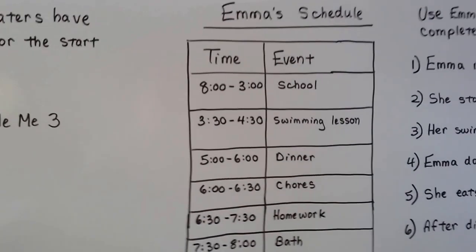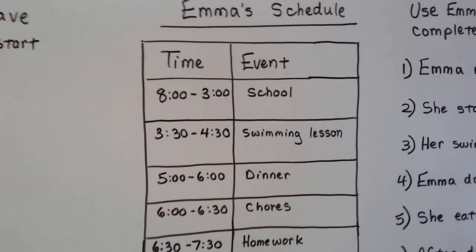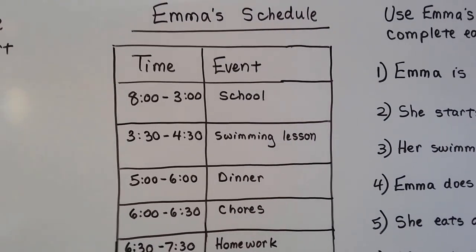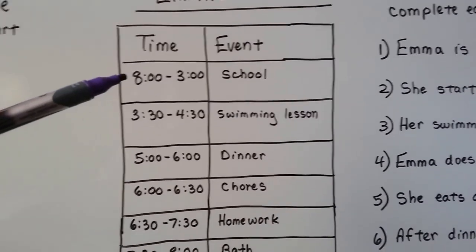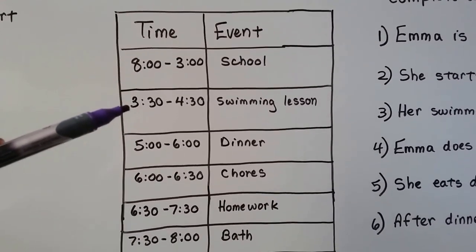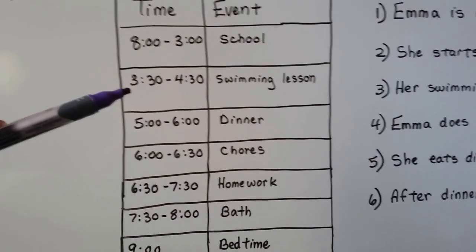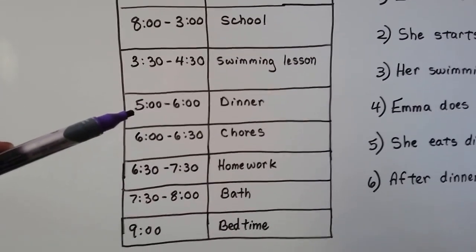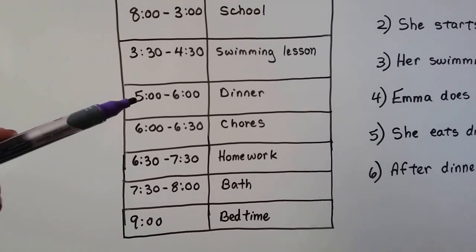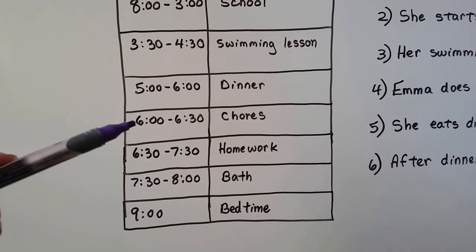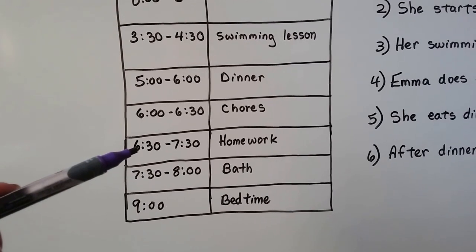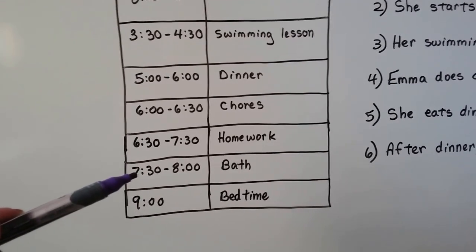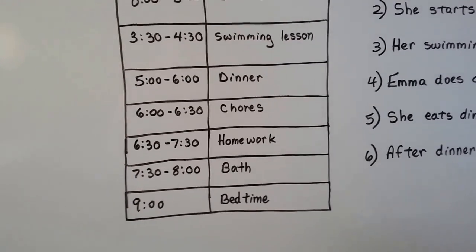Now here's Emma's schedule, and this is make pretend for the lesson. But I made a schedule for Emma. We can see from 8 o'clock to 3 o'clock she's in school. From 3:30 to 4:30 she has a swimming lesson. From 5 o'clock to 6 o'clock she eats dinner. From 6 o'clock to 6:30 she does chores. From 6:30 to 7:30 she does her homework. Then she has a bath at 7:30, and then at 9 o'clock she's in bed.